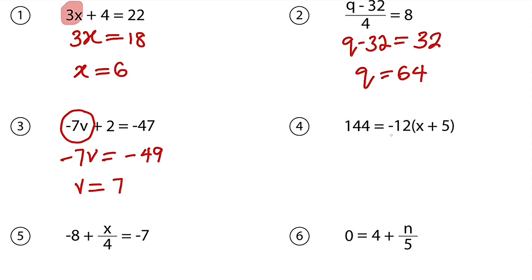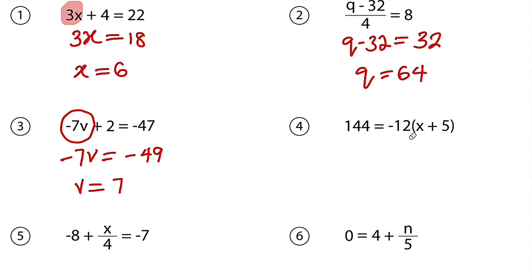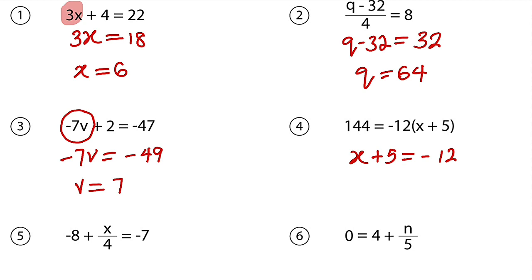Moving on to question number 4. We have negative 12 multiplied by the whole of x minus 5, but the result is positive 144. You should know that whenever you multiply two negative numbers, you must get a positive number. Already this is negative, so it means that this must also be negative. And I know that 12 times 12 is 144, which implies that this x minus 4 must be negative 12. Because negative 12 times negative 12 is 144. So we can simply set x plus 5 to be equal to negative 12. Then you need to ask yourself, 5 plus what number is negative 12? Definitely that number must be negative 17. Because negative 17 plus 5 is equal to negative 12. Once you can think, you have no problem.